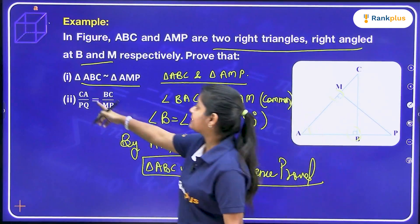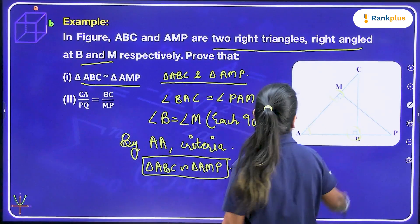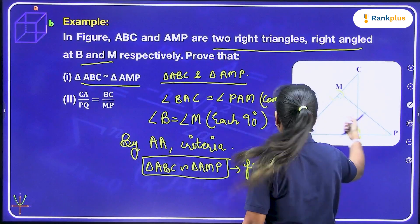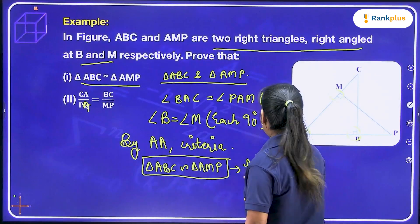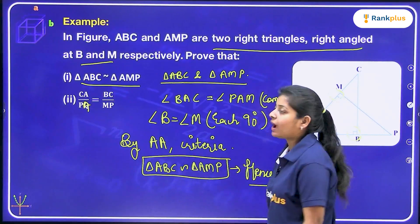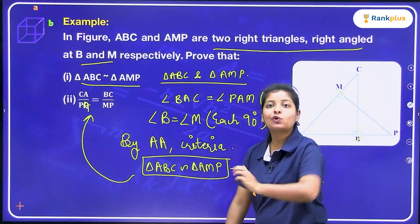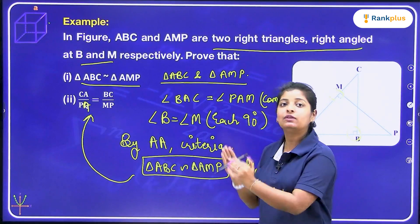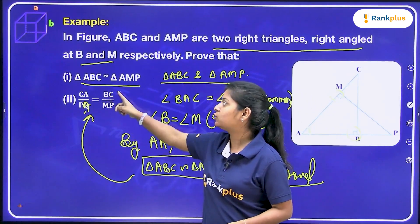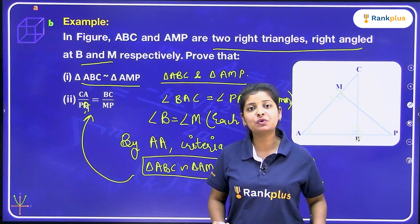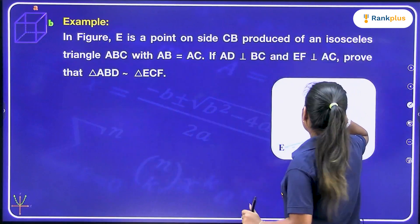The next part says CA upon PA is equal to BC upon MP. Since both triangles are similar, corresponding sides are also proportional. So this is directly proved from the similarity — CA upon PA equals BC upon MP. I hope this is clear, no confusion, no doubts.